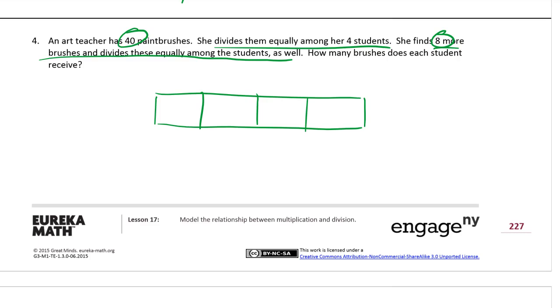So we know that there are 48 brushes. And we know that there are four students. But what we don't know is how many brushes every student gets. So we're going to take our 48 paintbrushes, divide them equally among the four students.